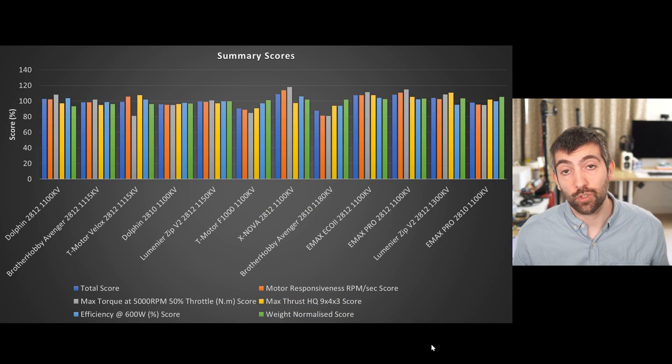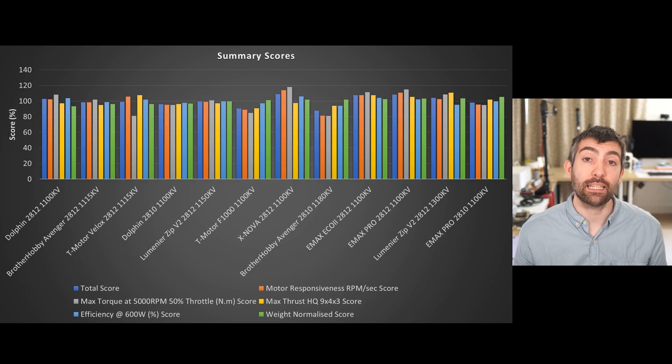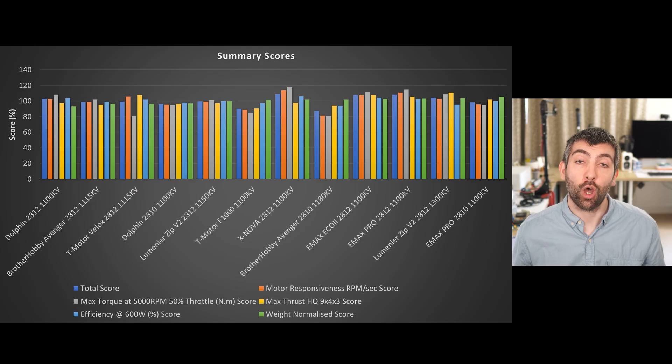Now it's time to look at the summary scores for all of the tests. I calculate these scores by taking the performance of each motor on a particular test and dividing by the average performance of all the motors tested on that spec point. That means an average motor is going to get a score of 100%, a motor that's 10% better than average a score of 110, and a motor that's 10% worse than average a score of 90. We do that for all the different tests and then I take the total score as the average of all of the scores not taking into account the weight of the motor, and then the weight normalized score takes into account the weight of the motor as well.